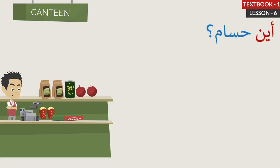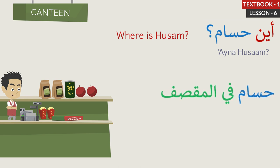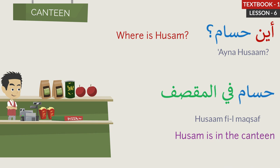Aina Hussam? Where is Hussam? The answer is: Hussam Philmakthaba. Hussam is in the canteen. Let's repeat: Aina Hussam? Where is Hussam? Hussam Philmakthaba. Hussam is in the canteen.